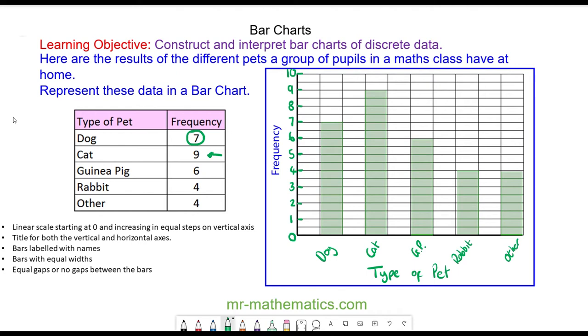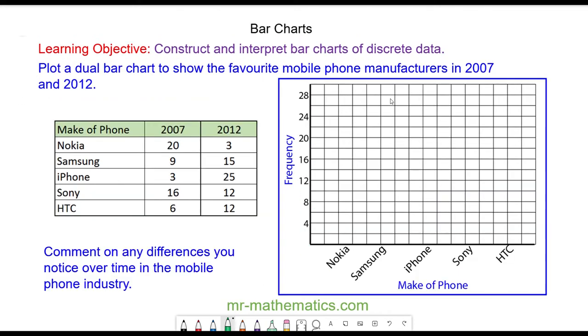Let's move on to creating a dual bar chart. We'll show favorite mobile phone manufacturers in 2007 and 2012, using purple bars for 2007 and orange bars for 2012.